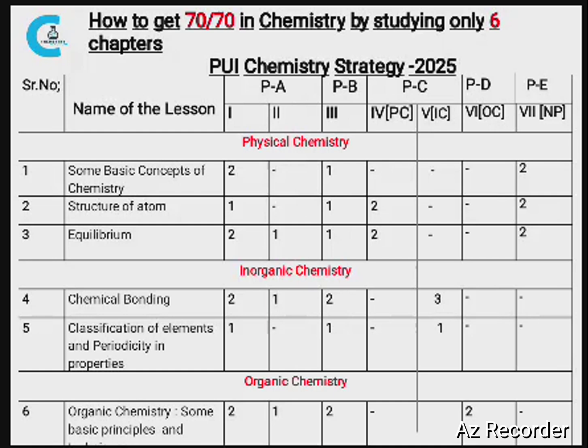So 3 chapters from physical chemistry I have taken. Carefully see: Some Basic Concepts of Chemistry. You will get questions in Part A (1 mark), Part B (2 mark), Part C (3 mark), Part D (5 mark), and Part E — numerical problem (3 marks).